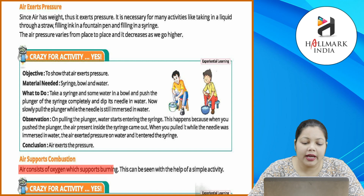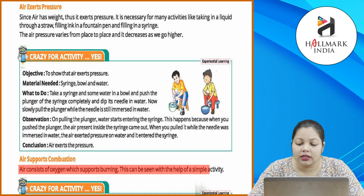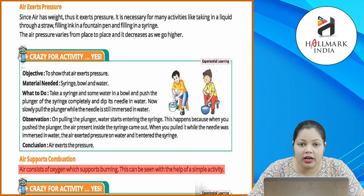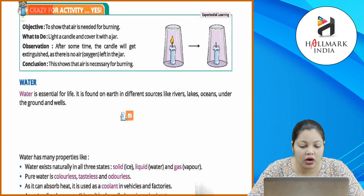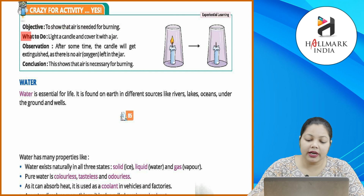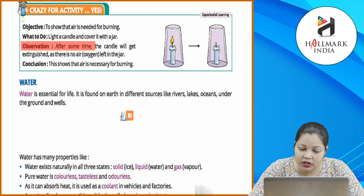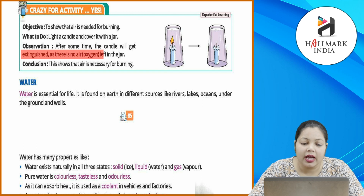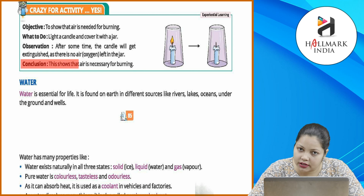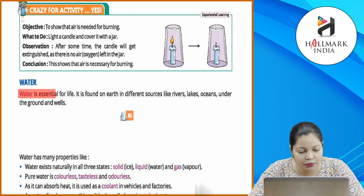Air supports combustion: air consists of oxygen which supports burning. Crazy for activity — objective: to show that air is needed for burning. What to do: light a candle and cover it with a jar. Observation: after some time, the candle will get extinguished as there is no air/oxygen left in the jar. Conclusion: this shows that air is necessary for burning.